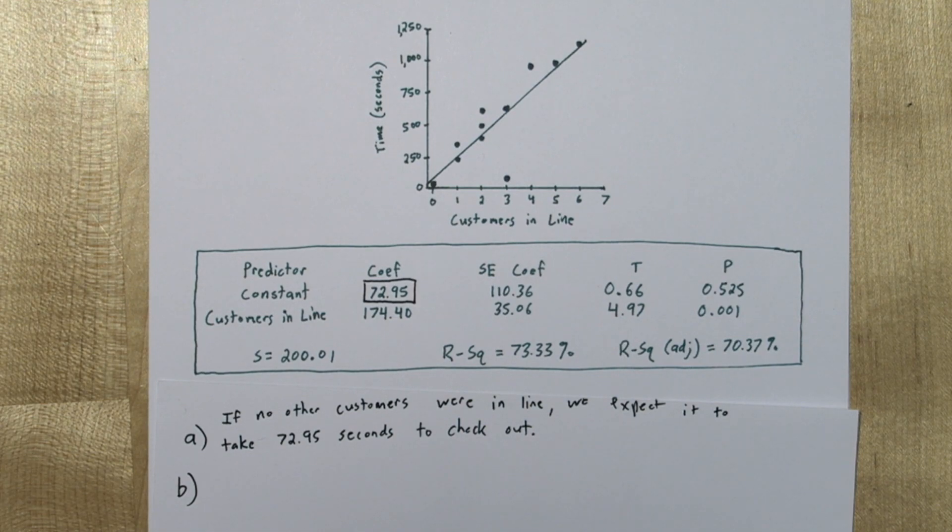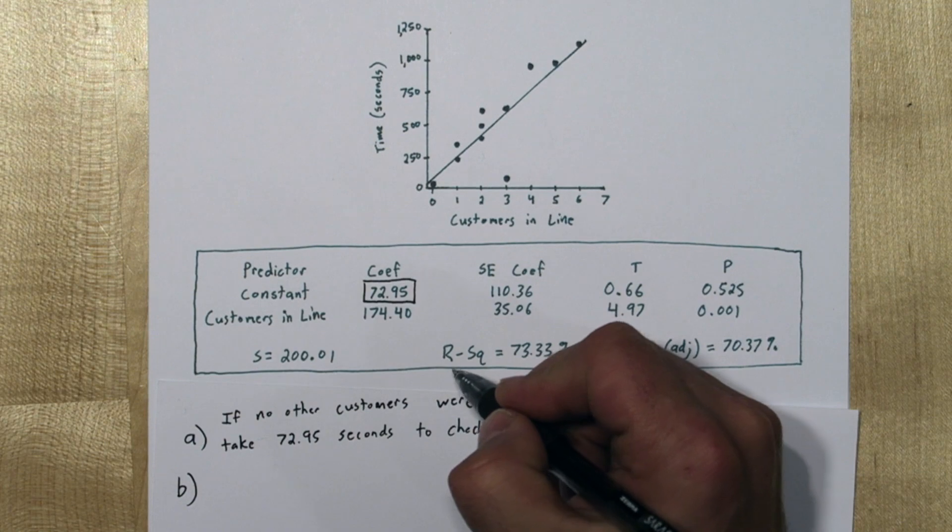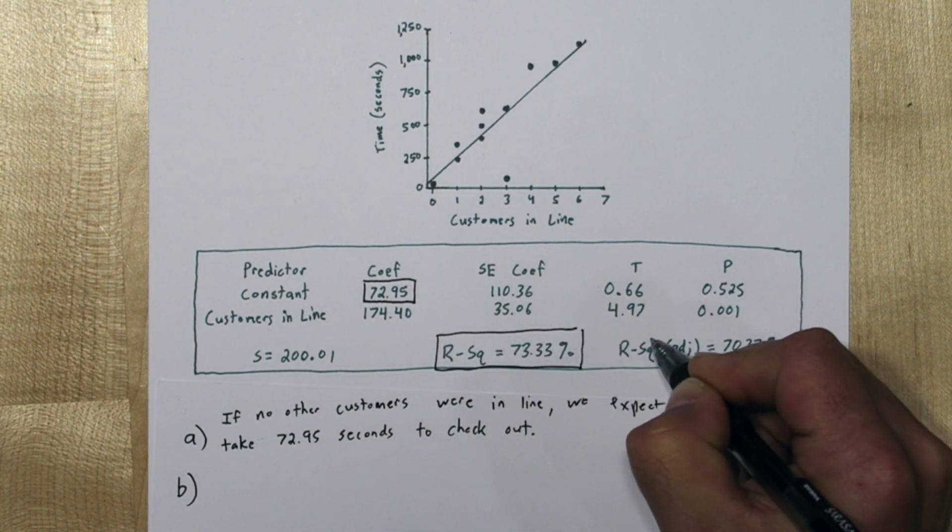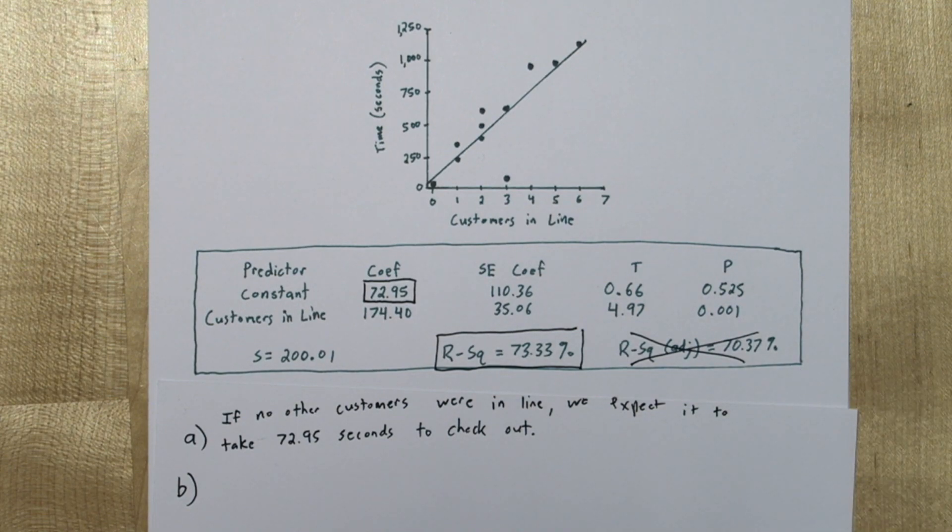The tricky part for part B is to figure out which R-squared to use. In AP Stats, we always use the regular R-squared, that's the one right here. So you can just cross out this R-squared adjusted.